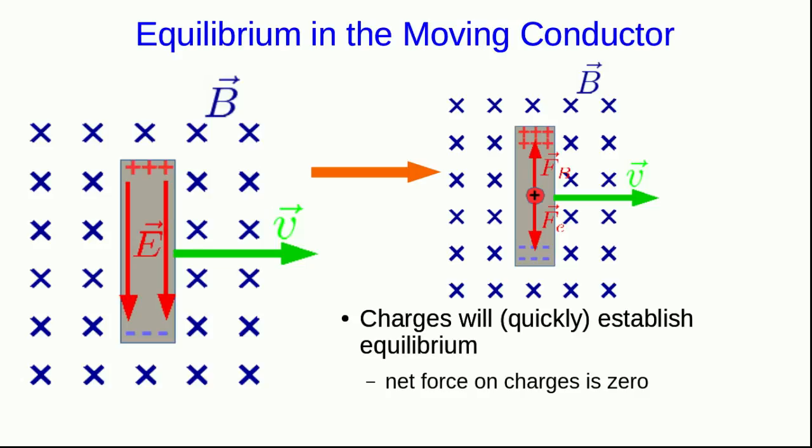And note, we've already established the magnetic force on these charges is up. The electric force on these charges will be in the direction of the E field, down. And so, rather quickly, equilibrium is re-established when the net force on the charges is zero.